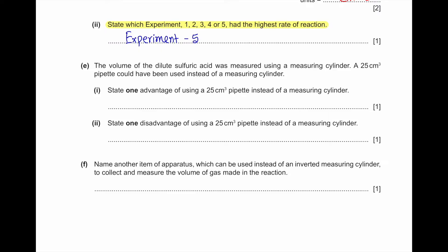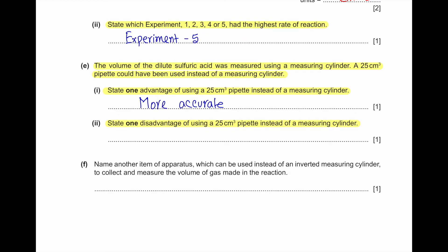Part E: The volume of dilute sulfuric acid was measured using a measuring cylinder; a 25 cm³ pipette could have been used instead. One advantage of using a 25 cm³ pipette is that pipettes are more accurate. One disadvantage is that using a pipette is slower than using a measuring cylinder — it takes more time.